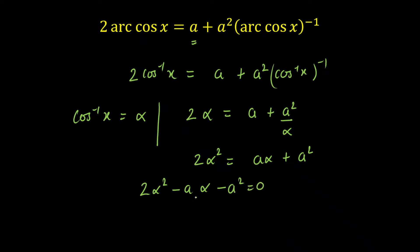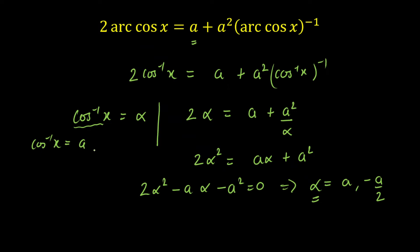From here I can easily factorize — the factors are quite visible: (−2α)(+A) and (+Aα). So the values of α are either A or −A/2. From the quadratic equation we got two solutions of α: either α = A or α = −A/2. Since we initially took α = cos⁻¹(x), the value of cos⁻¹(x) is either A or −A/2.